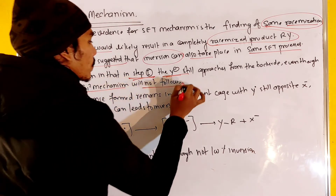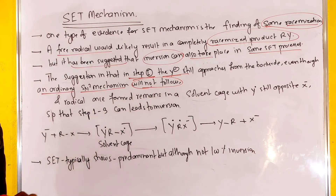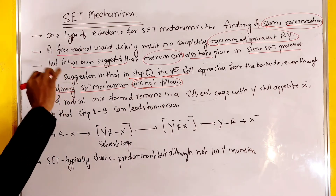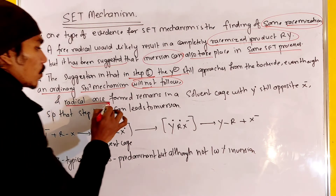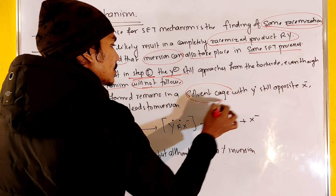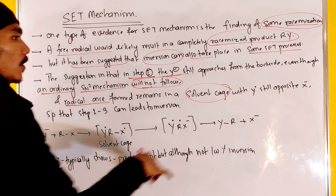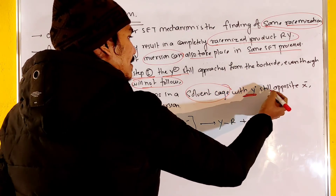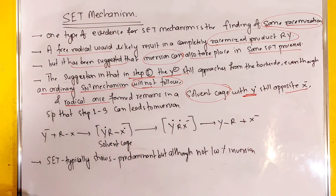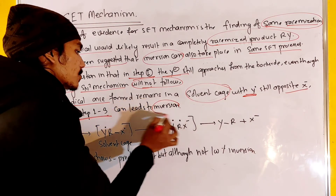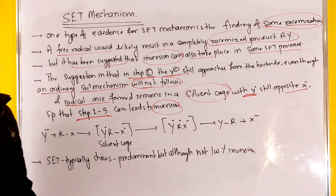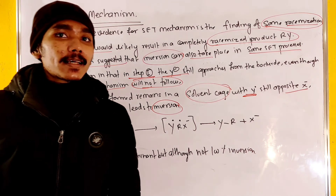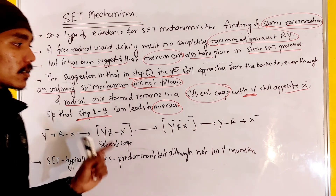SET mechanisms will follow up. And the radical form remains in the solvent cage with Y free radical, still opposite to the X minus. So that steps 1 and 3 can lead to inversion — we have 100% inversion. We are not fully certain of this; in this case we have 100% inversion, and retention is also available.